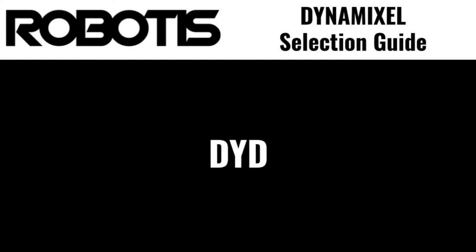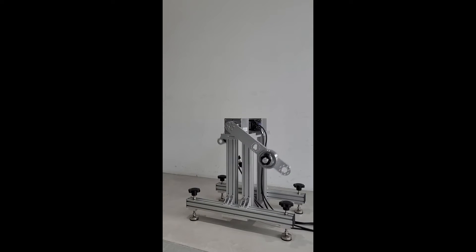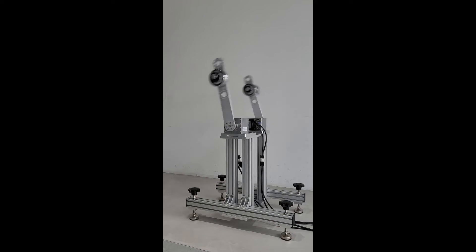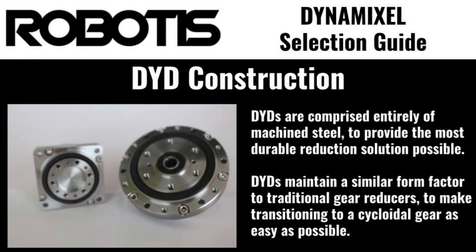The final high-performance component in Robotis's catalog is the DYD gear reducer. The DYD is a standalone version of the cycloidal gear head featured in the P-Series and DY Dynamixel actuators, enabling use of Robotis's patented compact and durable cycloidal reduction solution with any actuator or DC motor. The DYD features solid steel construction to maximize service life and is designed with a familiar form factor to enable integration into existing systems. It is available in six different configurations offering various sizes, gear reductions, and mounting options.